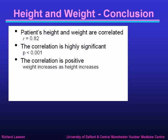In conclusion, we can say that the patients' height and weight are indeed correlated, with a correlation coefficient of 0.82. Moreover, that correlation is highly significant, with a p-value of less than 0.001. The correlation is positive — that is, weight increases as height increases — we have a positive value of r, and we saw from the graph that the trend was in the upward direction.